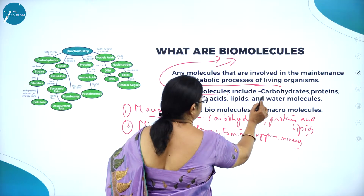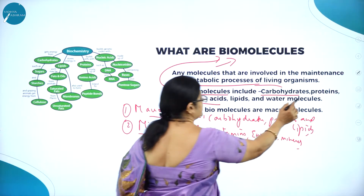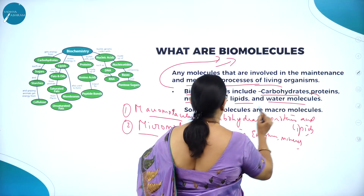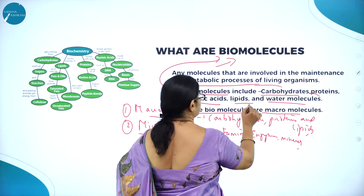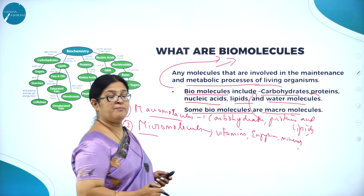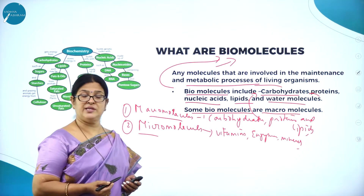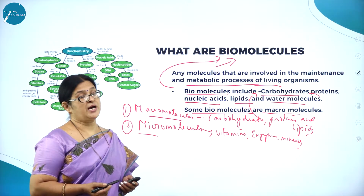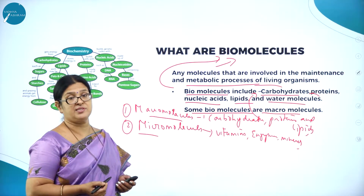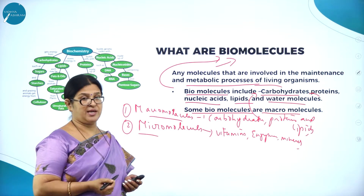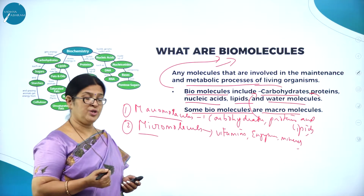Biomolecules include carbohydrates, proteins, nucleic acids, lipids, and water molecules. Some biomolecules are called macromolecules. Vitamins and enzymes are micromolecules — our body itself synthesizes vitamins and enzymes, so they are called micronutrients, while carbohydrates, proteins and lipids are called macronutrients.